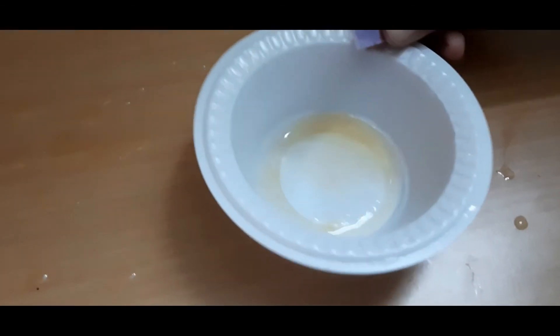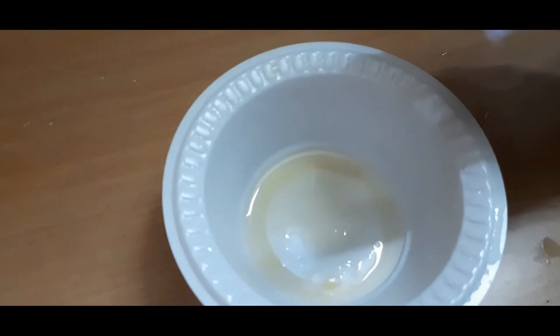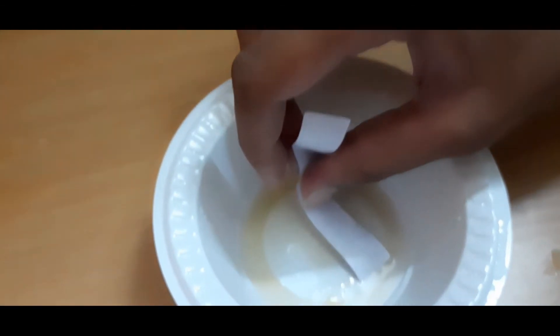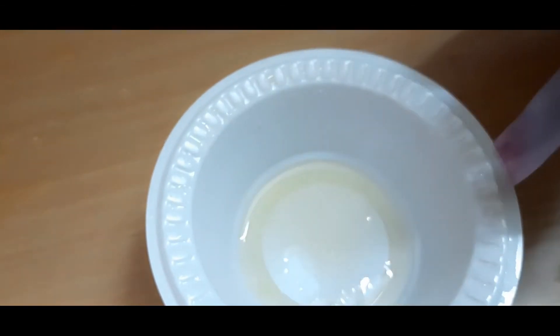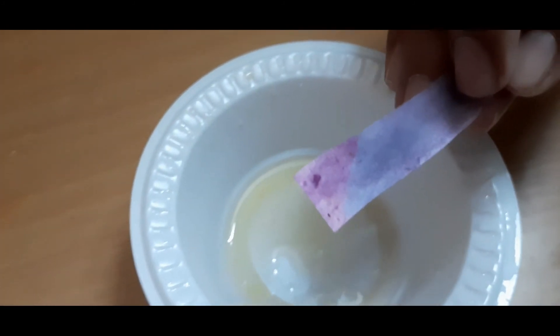The next one is orange juice. So here is my litmus paper. I'll just put it in. One, two. And it turned red. So it's an acid.